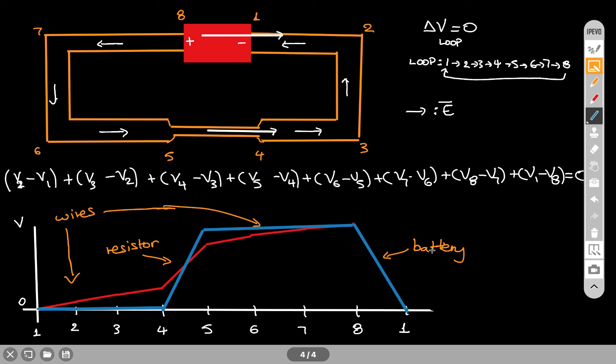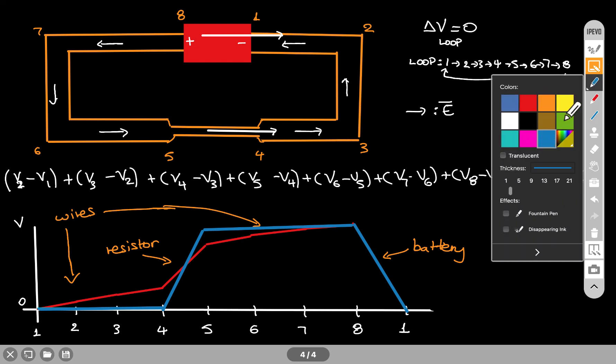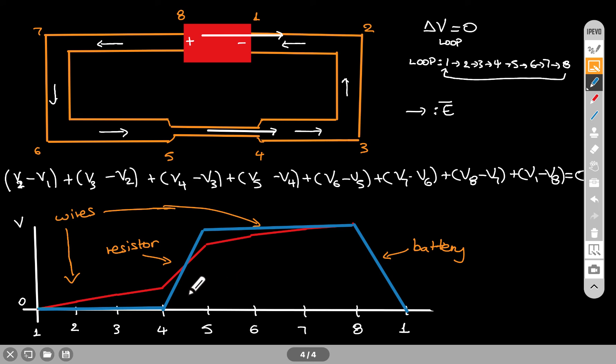So the blue line represents theory and the red line represents experiment.